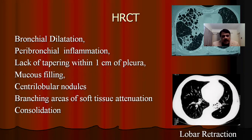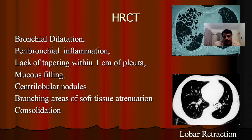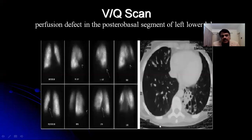HRCT is the basis for treatment and the keystone for diagnosis of bronchiectasis: bronchial dilatation, peribronchial inflammation, lack of tapering within one centimeter of the pleura, and mucus-filled areas. This CT scan beautifully depicts the right side as normal while the left side is diseased, confined to only the basal segmental areas of the lower lobe. The upper lobe and superior segment are normal, the entire basal segment is contracted — known as lobar retraction — and this yields an excellent result with surgery.